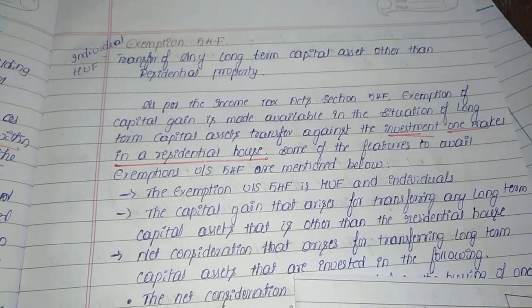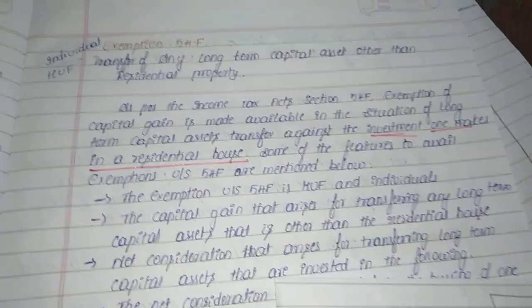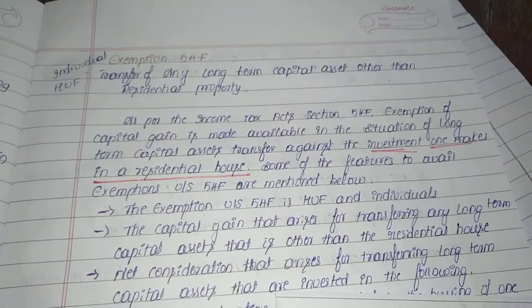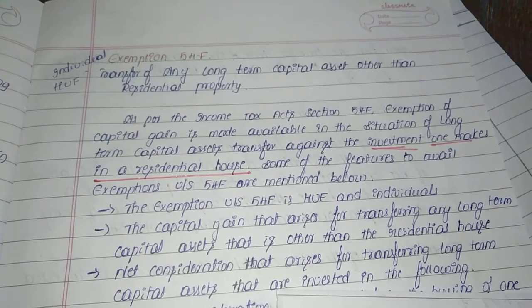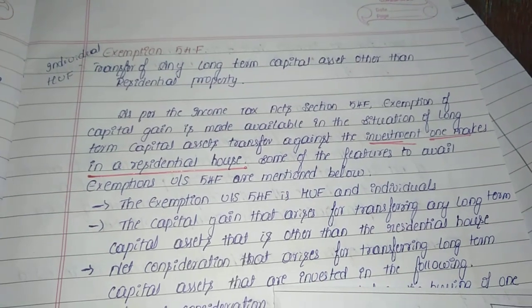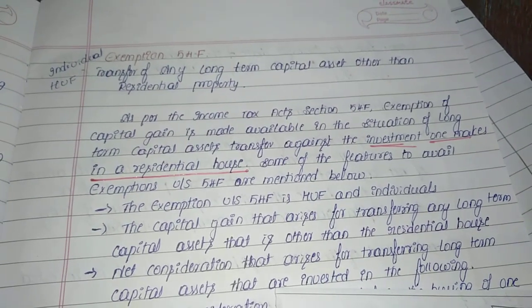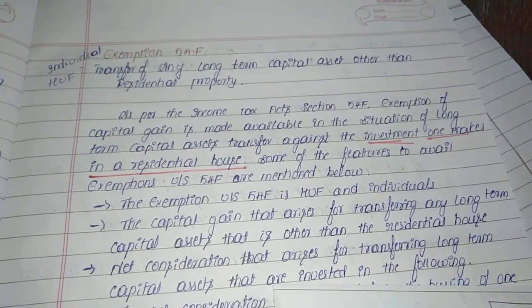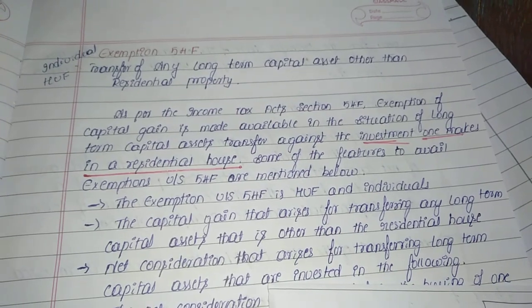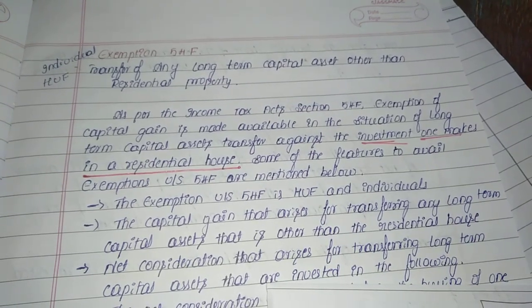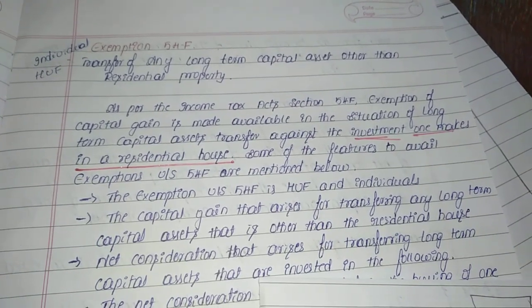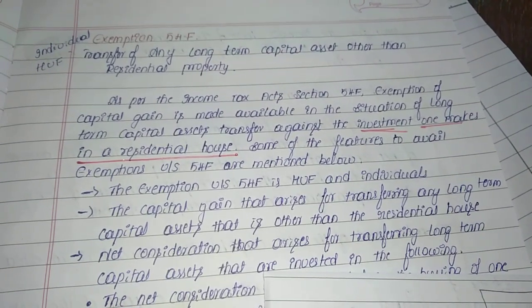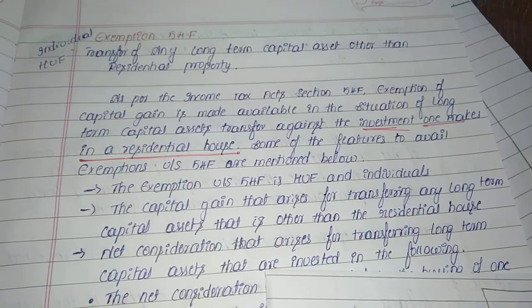Okay, next one — continuation part: exemption under section 54F. Under section 54F, exemptions are available, but again, certain conditions you have to fulfill. After fulfilling those conditions, you will get the exemption under section 54.